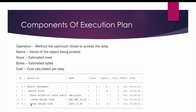Similarly, operation number four — index unique scan — is making use of the index department_id_pk to access the departments table on the primary key, that is department id. You can see other operations as well: the select statement, and the nested loop, which is the join between employees and the departments table.